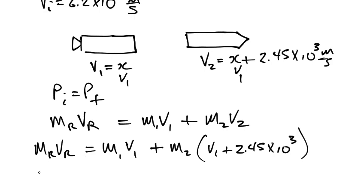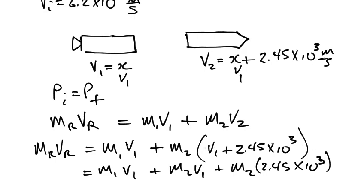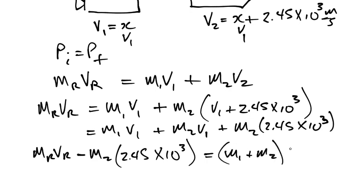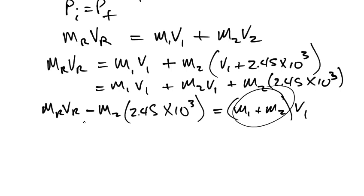Now, we're going to solve for V1. So this is going to equal M2 times V1 plus M2 times 2.45, multiplying it out. And now what we're going to do is we're going to collect like terms here with the V1s, and we're going to take this M2 term here and put it on the other side. So we're going to have MR VR minus M2 times 2.45 times 10 to the power of 3. And then over here, we're going to end up having M1 plus M2 times V1. And so now we just take this term, the summation of the two masses, and put that in the denominator.